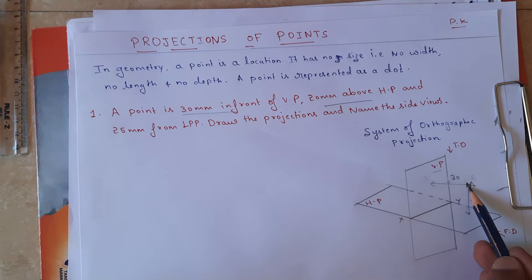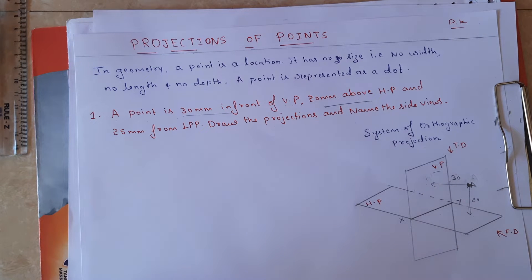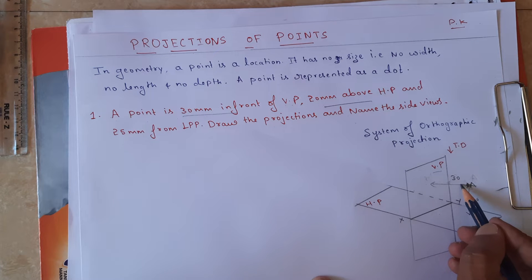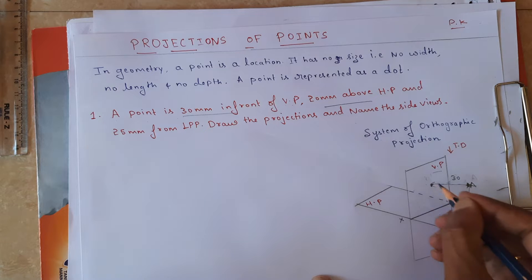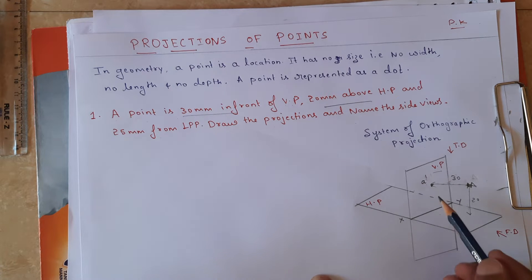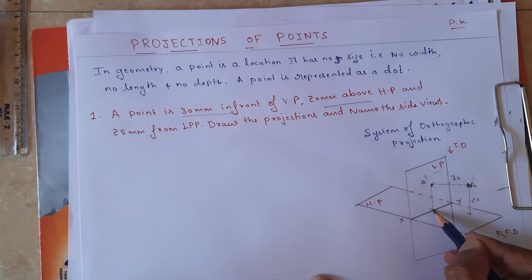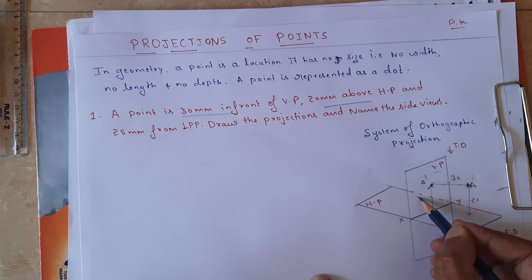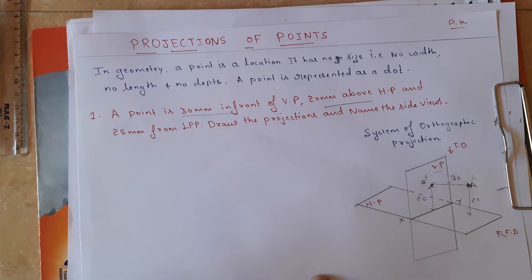The front view will always be on the vertical plane. So I am going to draw the orthographic projection of this, and this is where I am going to get a dash (a'). What will be the distance of a dash from the XY line? It will be 20 mm, because the point is 20 mm above HP.